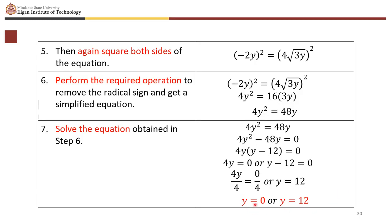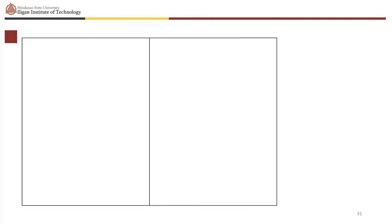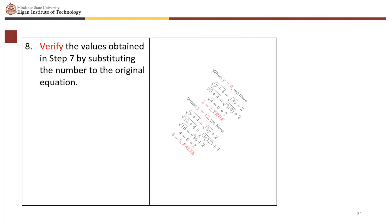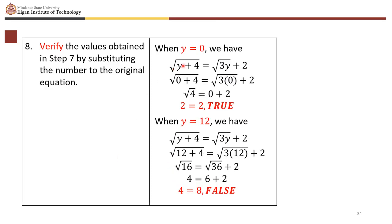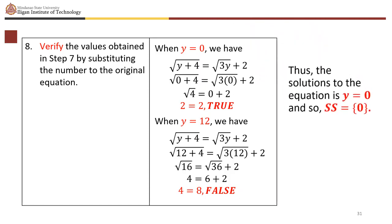Verify both values. When y equals 0: square root of (0 plus 4) equals square root of (3 times 0 plus 2), giving 2 equals 2, which is true. When y equals 12, the result is false. Therefore the solution set is {0}.